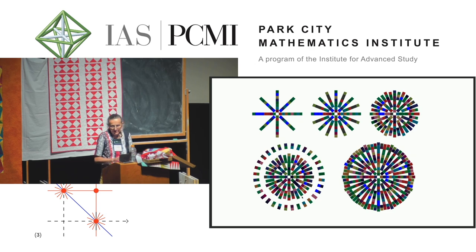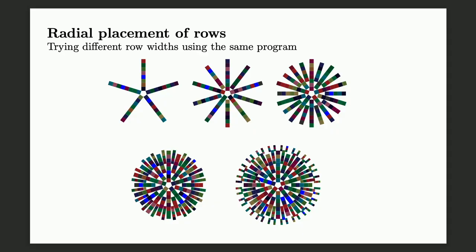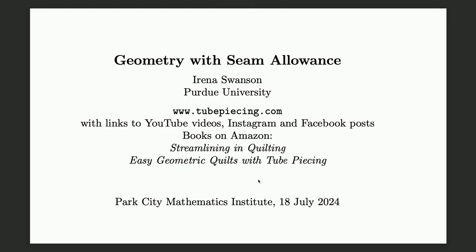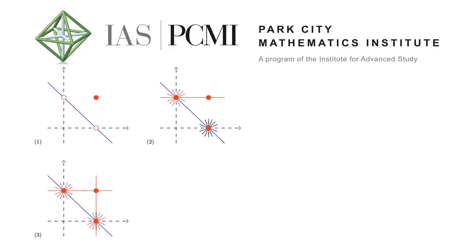Another idea: why should all my rows be the same width? If you use different widths, you mess up your proportions and have to think really hard about putting them together. I'll stop here. If you're interested in more, I have a YouTube channel, a website, Instagram, and Facebook where you can see more. Feel free to come up here and touch the quilts.